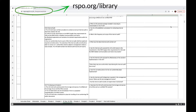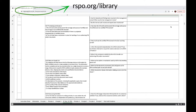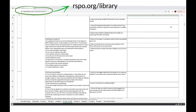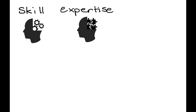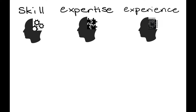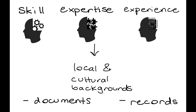This checklist lays out specific, but non-exhaustive questions for auditors to ask during audits to help them in ascertaining compliance or non-compliance with the indicators of the latest P&C. While this checklist exists, what is also required is the skill, expertise and experience of the auditing team to assess the situation on the ground, taking into consideration local and cultural backgrounds, and to corroborate this with documents and records requested during site visits.